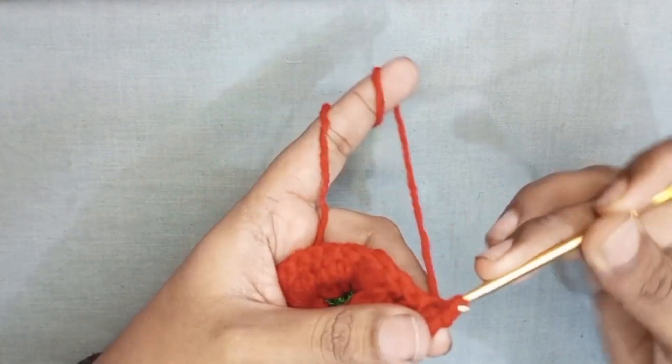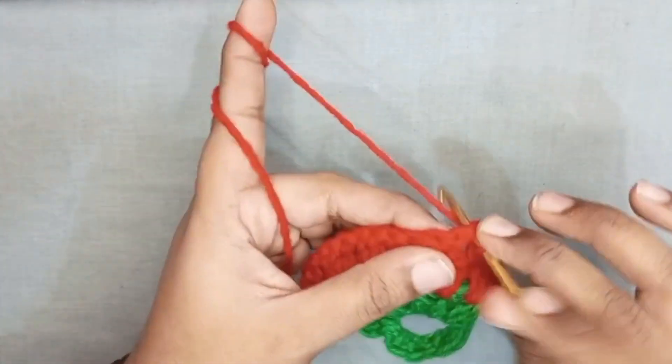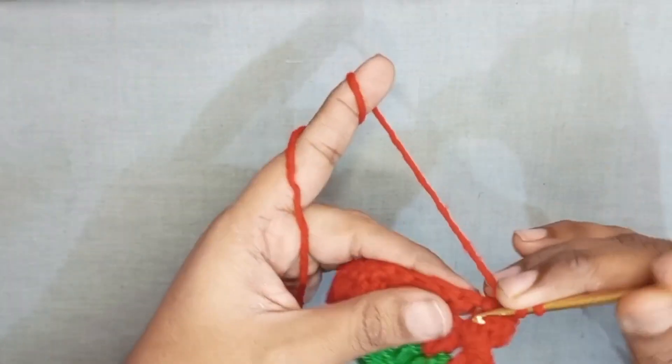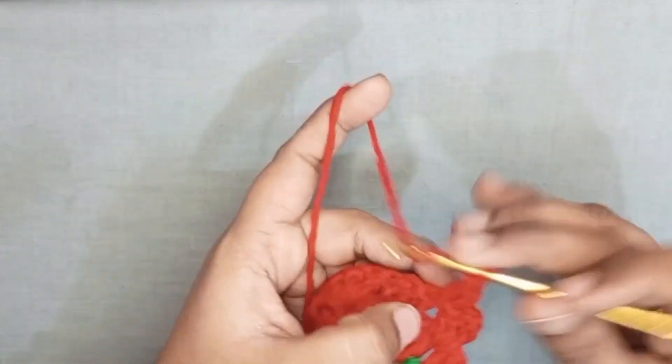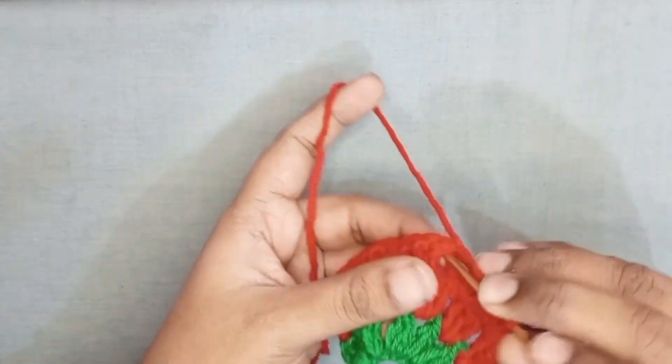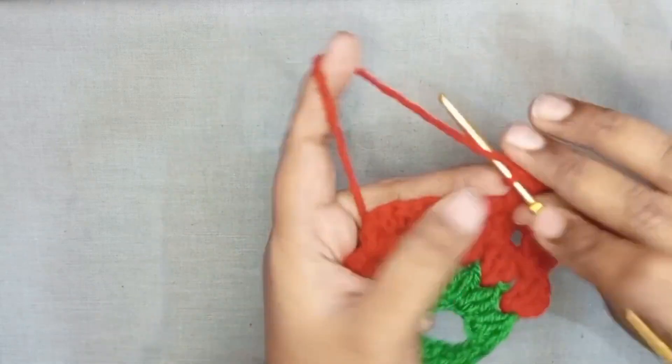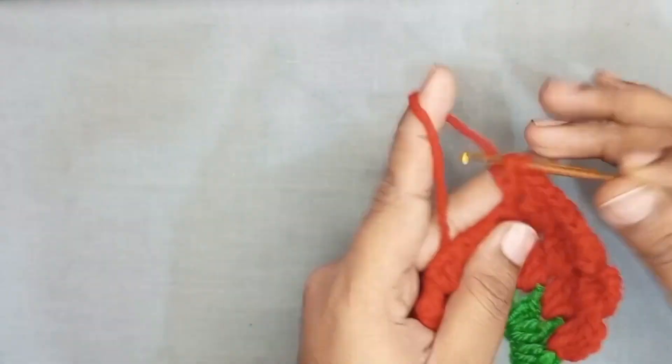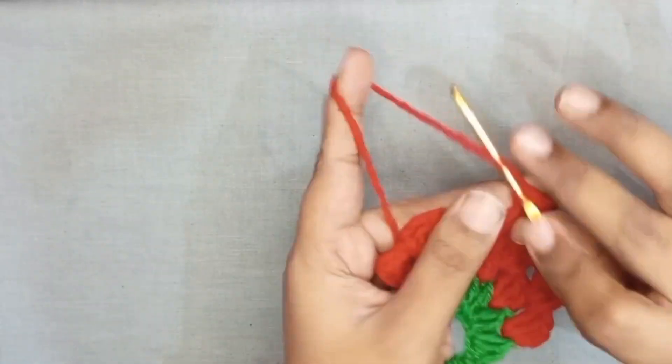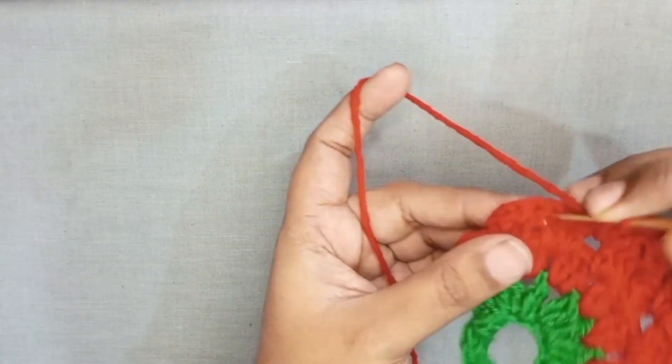In third round we make three slip stitch and insert the hole. Insert the hook in hole and make three double crochet. In third round we make four clusters: one, two, three, four.